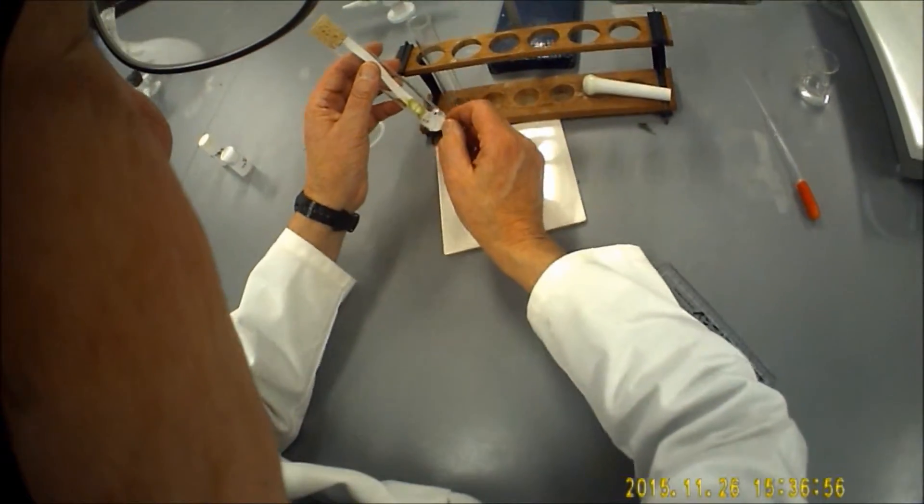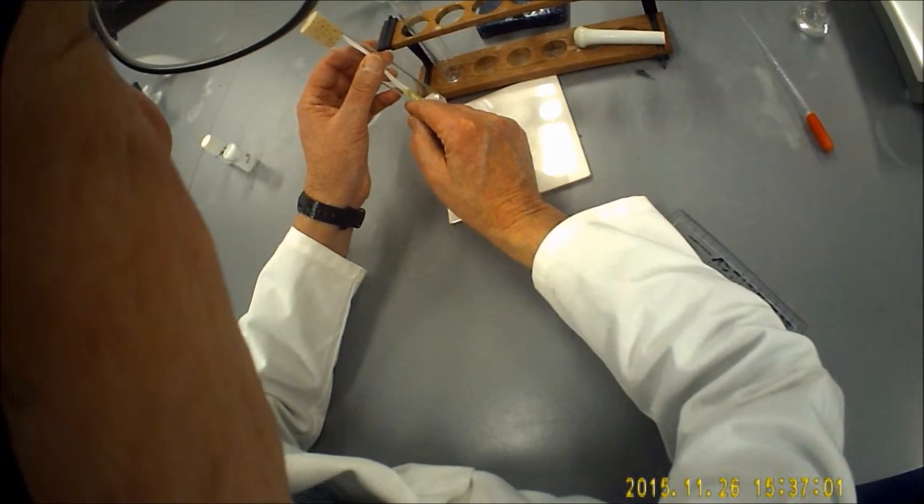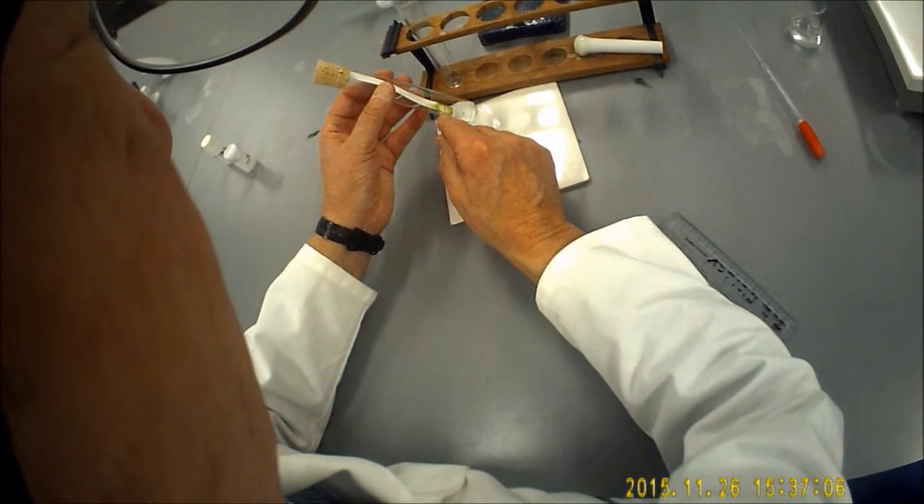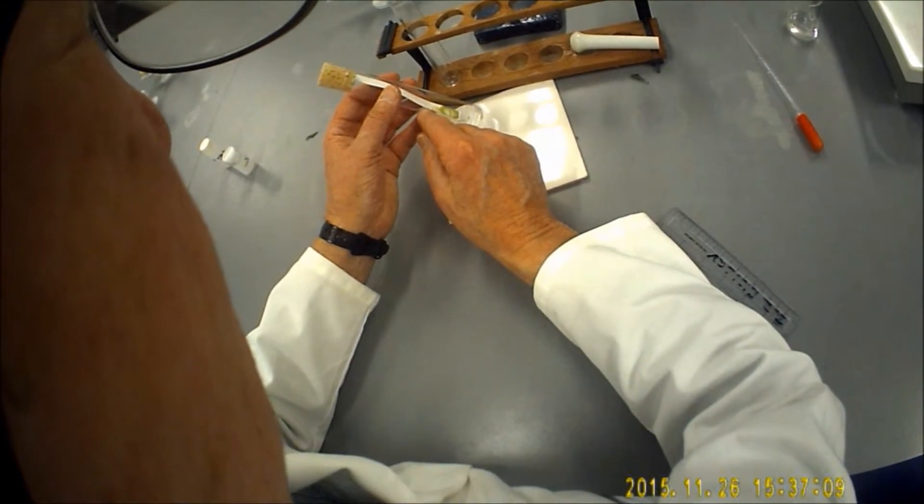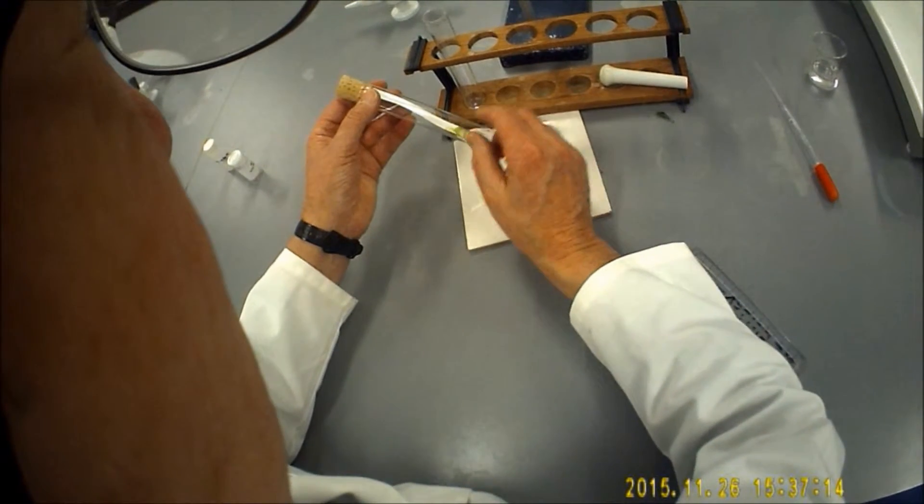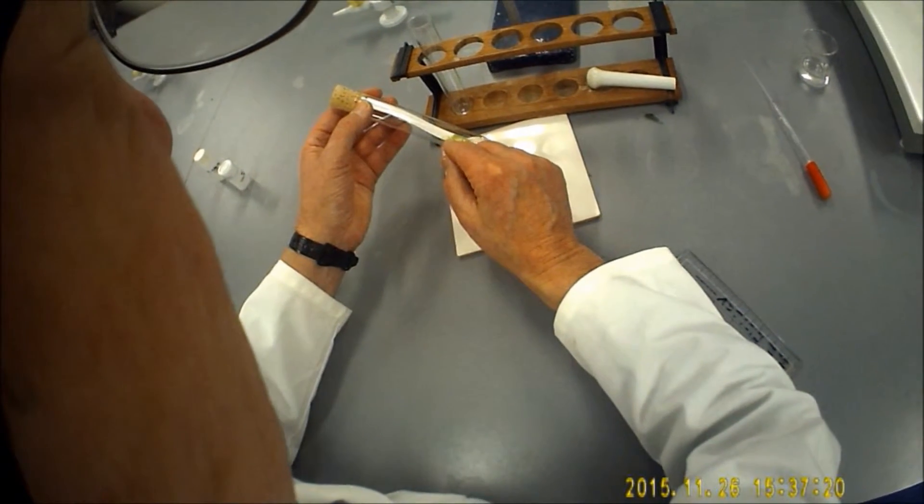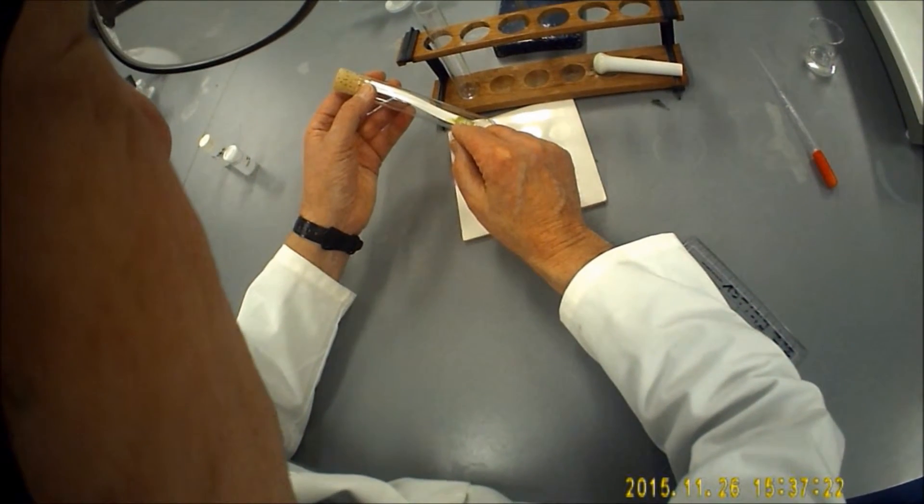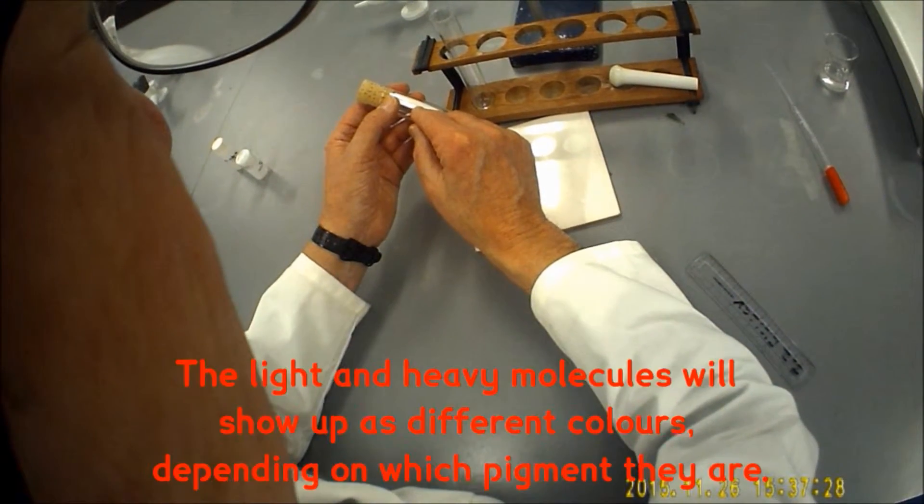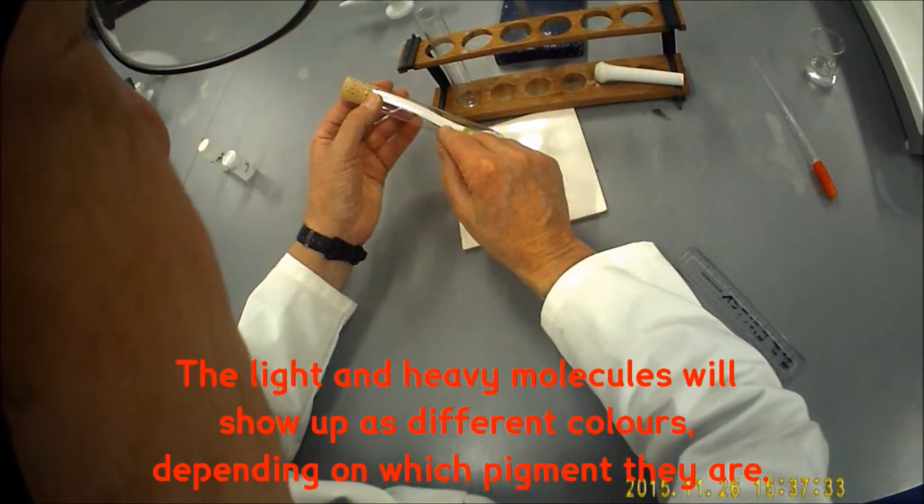What's going to happen is that the chromatography solvent is going to rise up through the pigment that we've deposited there. And as it travels up the paper it will carry the pigment with it. The lighter smaller molecules will be carried more rapidly than the heavier denser molecules. So you'll start to see a separation between the very light molecules which will be up towards the top of the column and the heavier molecules which will be further down.